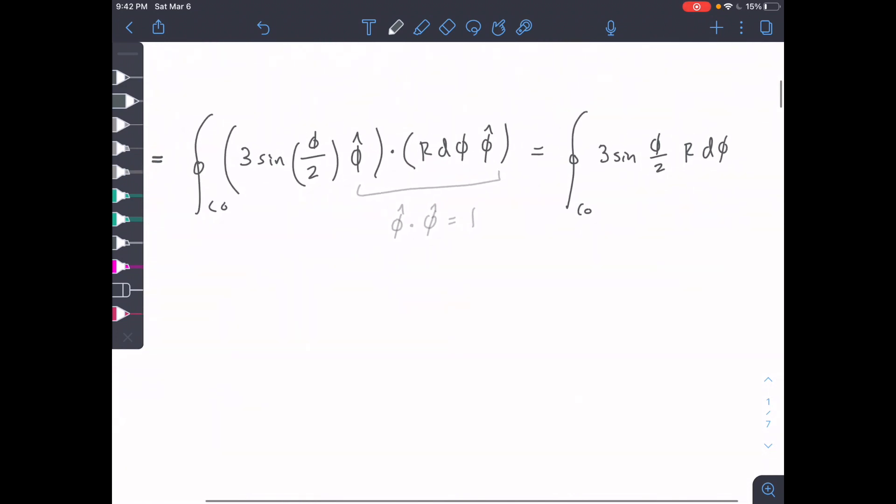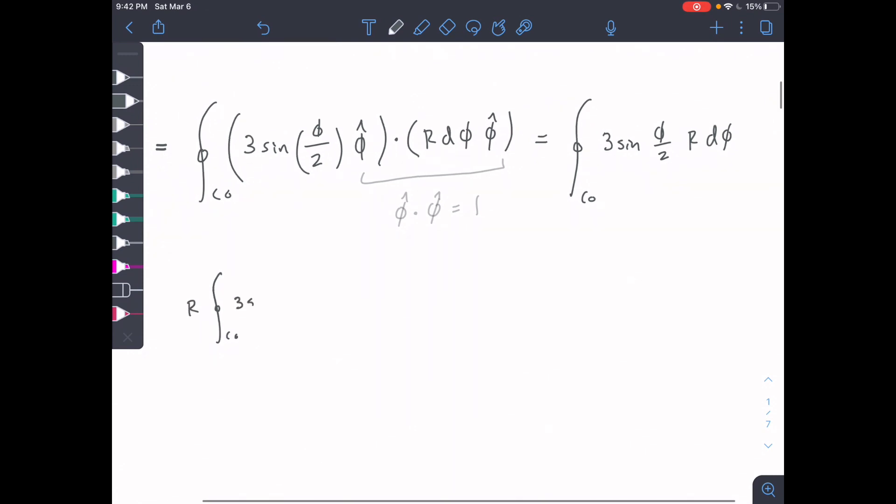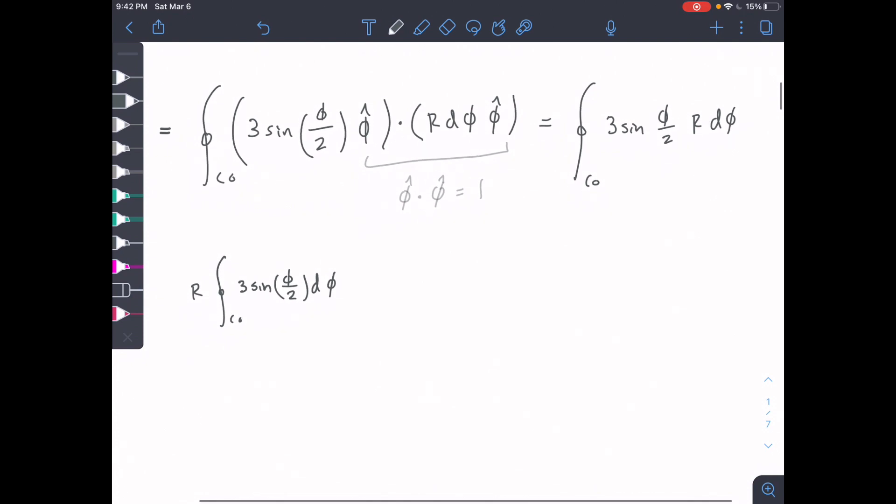We can pull our R to the outside because it is a constant and we know what it is. We're going to take R out here, and then we have 3 sine of phi over 2 d phi. I think that's correct. I'm going to double check myself as we're going.